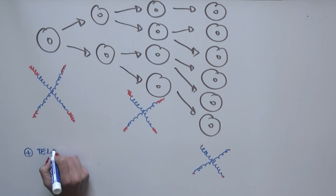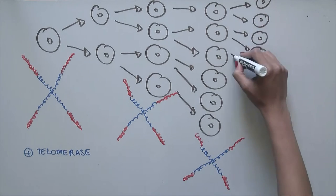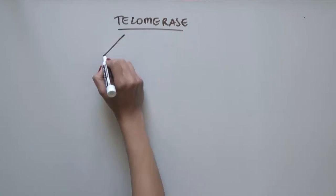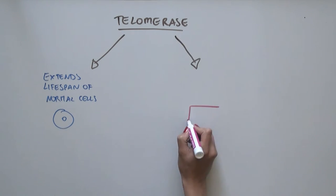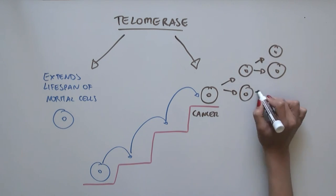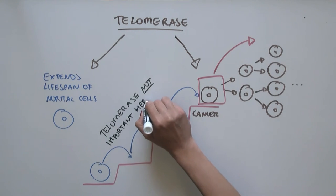What telomerase does is it lengthens this telomere DNA to allow the cell to keep dividing essentially forever. So telomerase is important to extend lifespan in normal cells. Before this finding, it was thought that telomerase in cancer cells simply allowed the cells that had reached the top of the staircase to keep dividing, but was not important in driving the cells up the staircase to a cancer state.